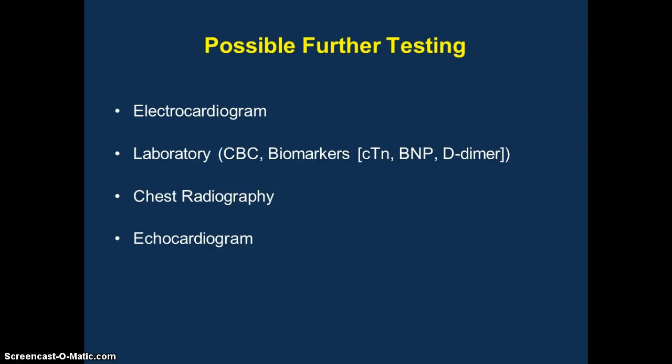Usually you can get chest radiography, but that again is dependent. Echocardiography is really rare to see in an outpatient setting unless you're closely tied to a cardiology service. In this case, let's say your EKG shows sinus tachycardia and some nonspecific T-wave changes, but no arrhythmia and no ST-segment elevation. And let's say your chest X-ray shows some bullous changes and flattened diaphragms with some borderline cardiomegaly, but no pneumothorax or infiltrate.